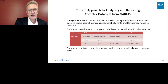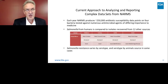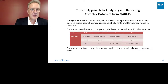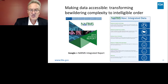Each year NARMS produces a lot of data, and we've added much more. We currently have Salmonella from 12 different sources, which we compare to those from humans. We grapple with how to put all this together in a comprehensive way that includes the genomic information — I'd invite you to Google NARMS integrated report to see our latest attempts to do this. This is ongoing work, but we're starting to weave the genetic data into the phenotypic data.